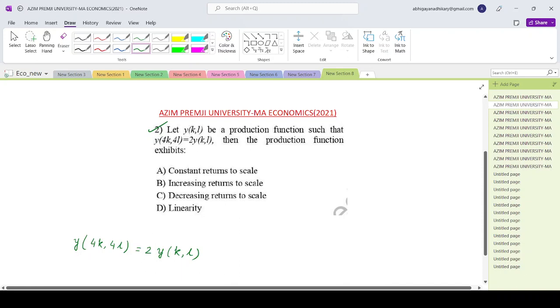Then the production function exhibits constant returns to scale, increasing returns to scale, decreasing returns to scale, and things like that. So one thing is clear. Since you are scaling up labor and capital four times, the output is only increasing twice. So that means it is decreasing returns to scale.